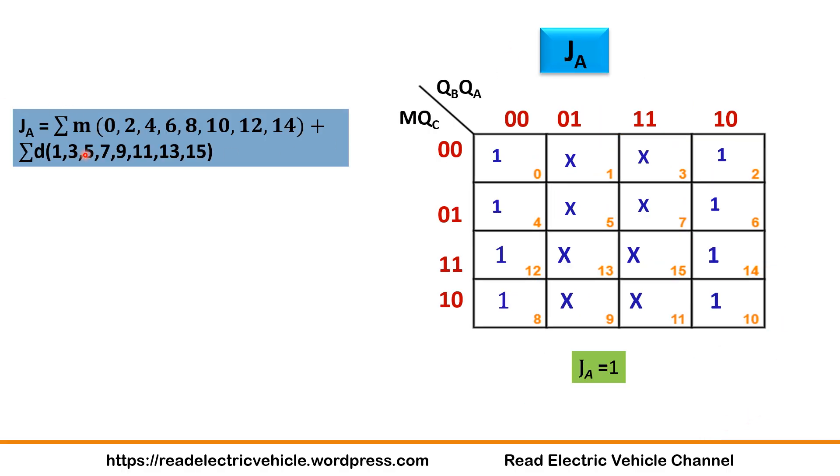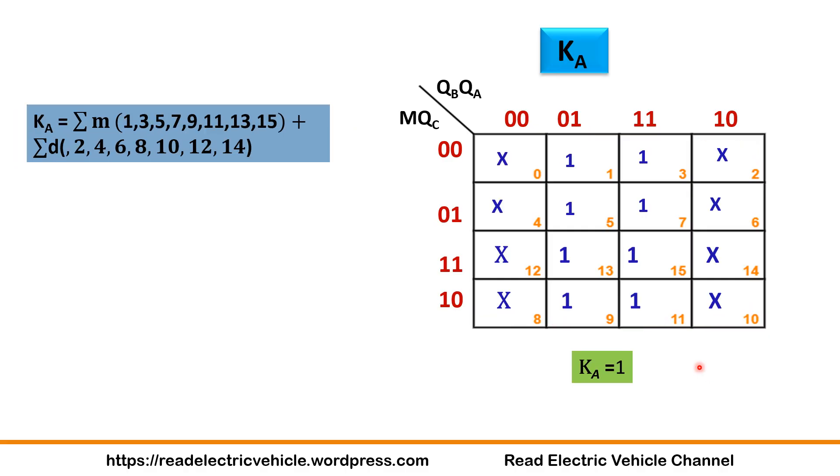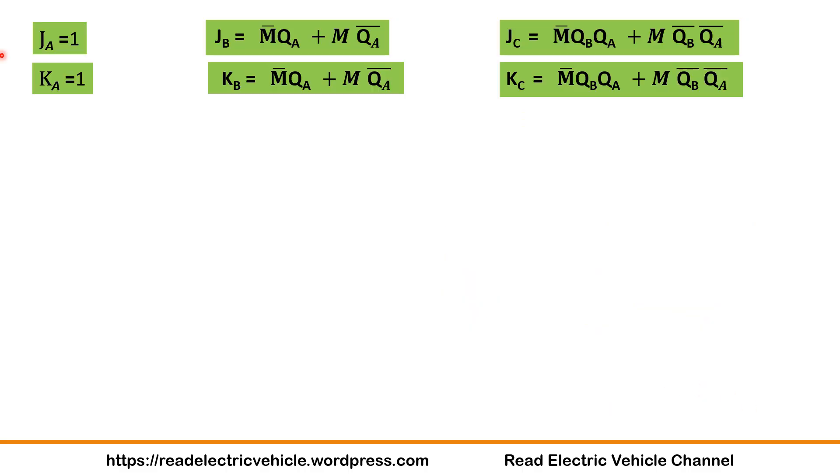Then we will simplify for JA. JA you need not do anything. All are ones and don't cares, so the whole table will come. JA = 1. KA also, all are ones, there are no zeros. So KA = 1. Now write JA, KA, JB, KB. We can find that J and K are same in all three flip-flops.